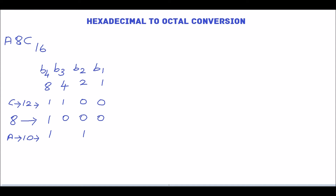Now we will write the binary equivalent of each hexadecimal digit together. The hexadecimal number A, 8, C can be represented as 1010, then 8 is 1000, and C is 1100 in binary.